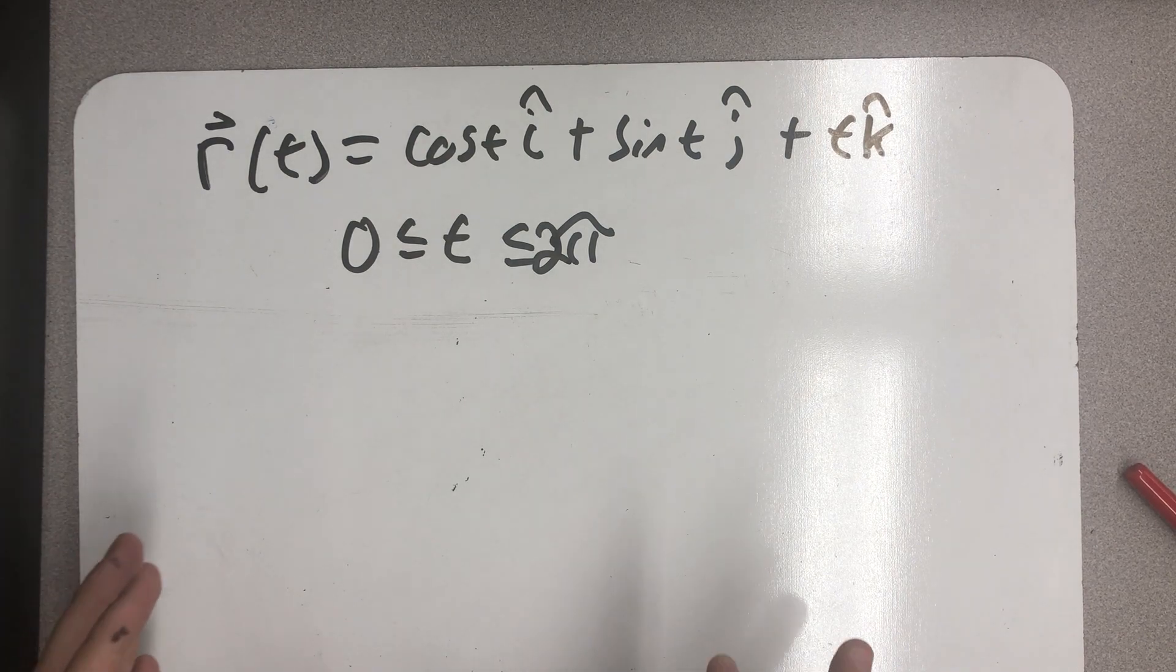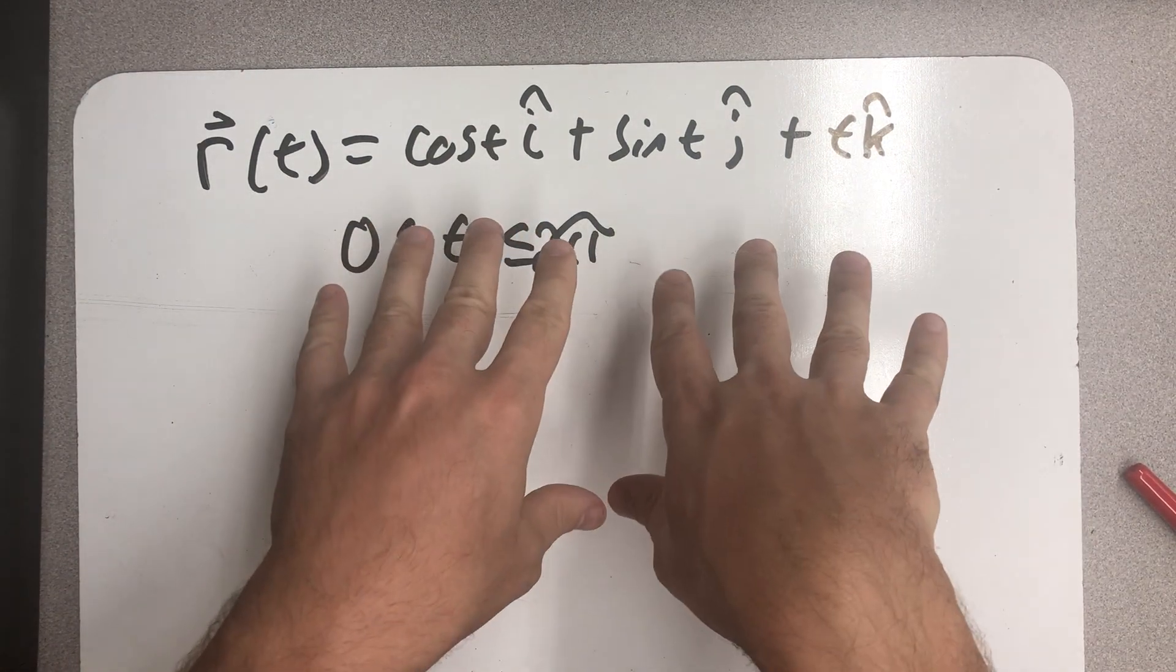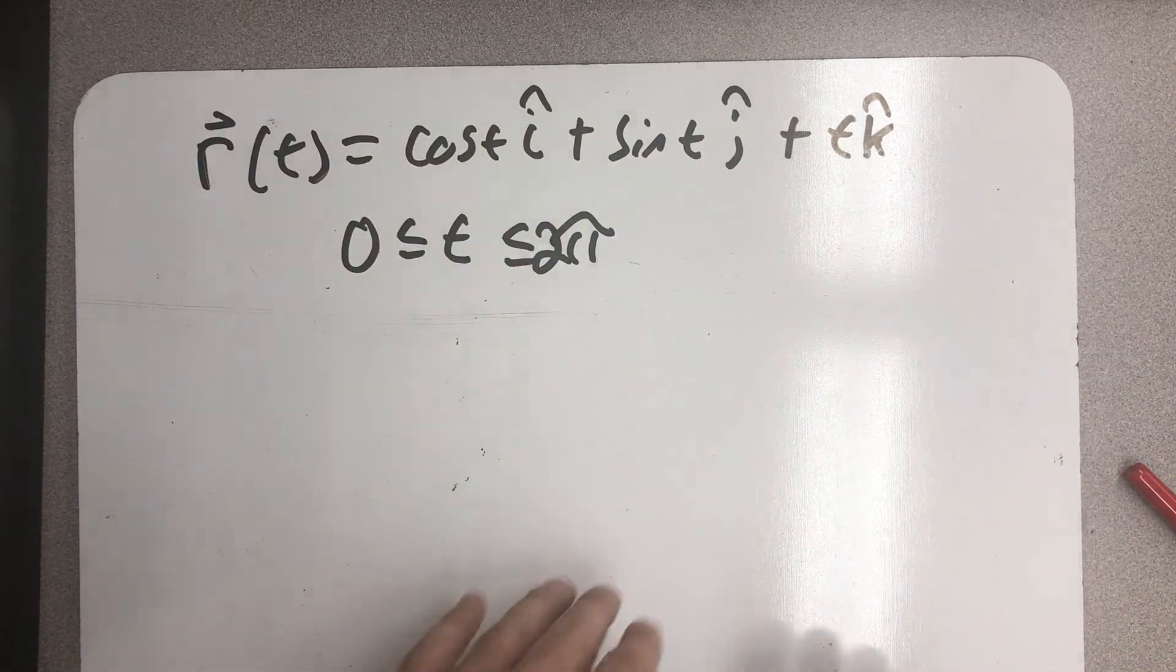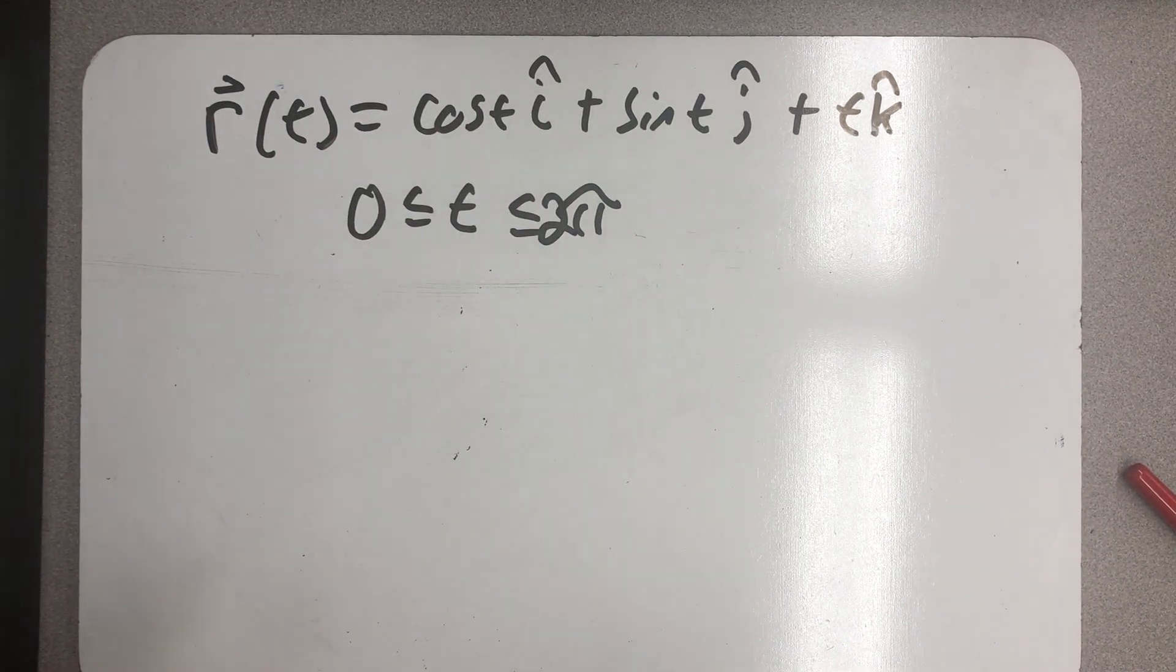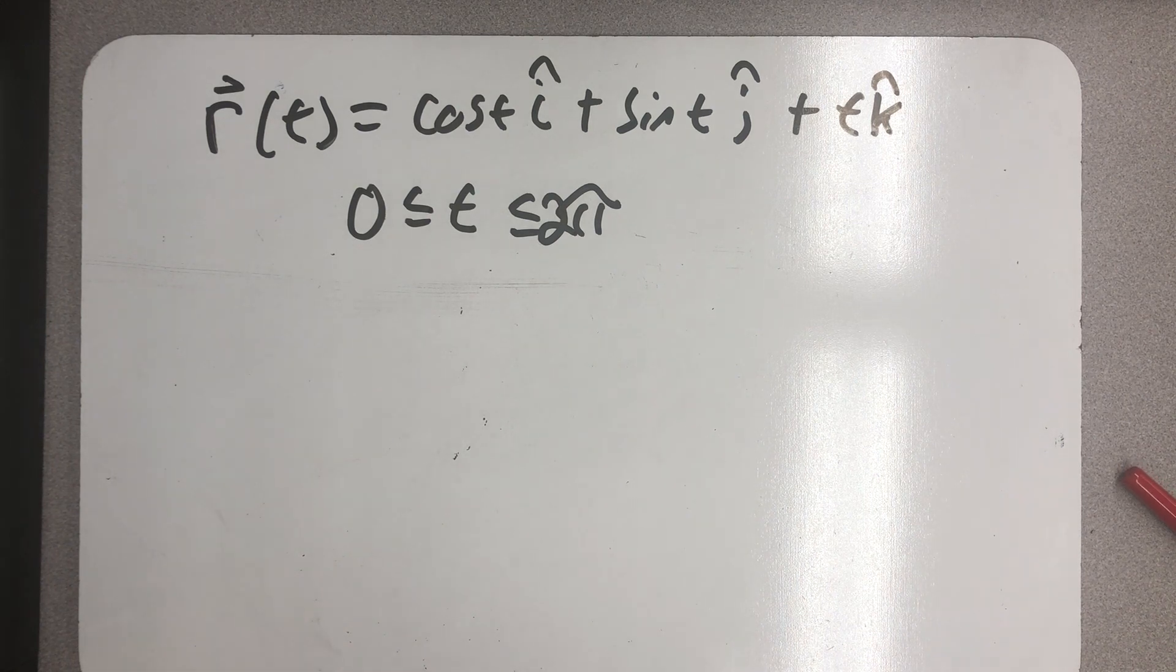This vector points to points on that helix, and we can imagine it tracing it out. So every time I have a set of parametric equations, I could imagine a vector function holding those in its components, pointing to places on it. I can kind of use the ideas interchangeably.